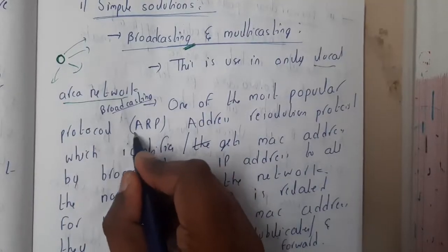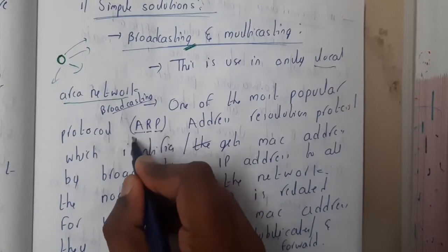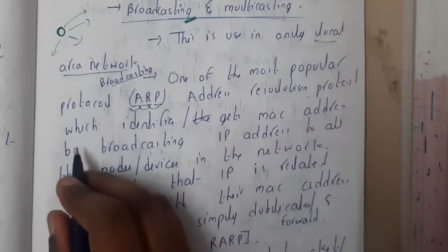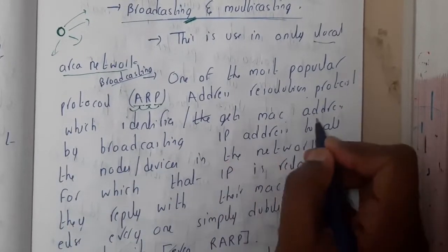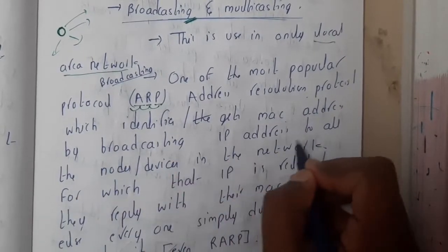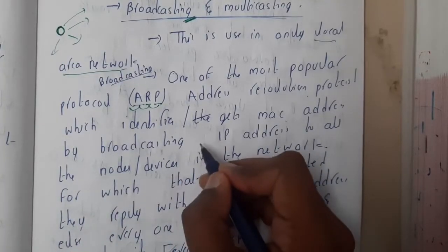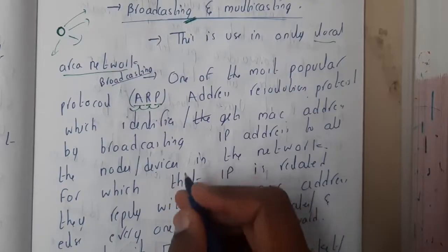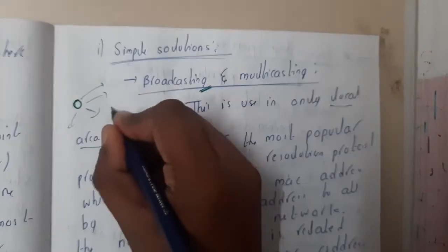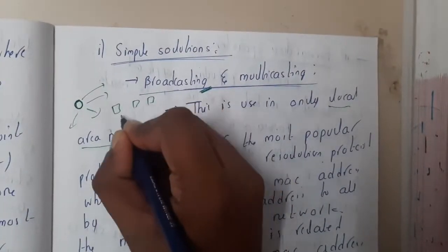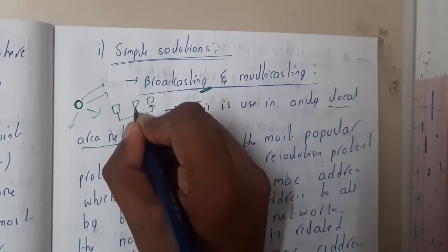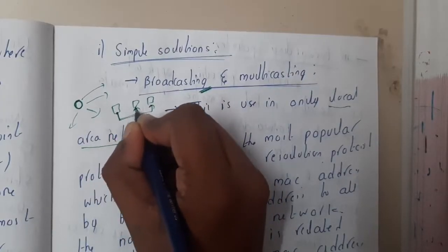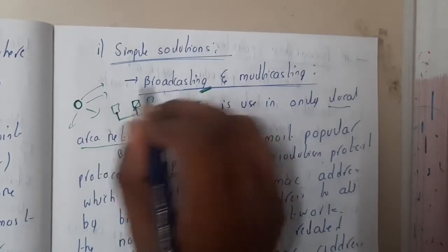One of the most popular protocols is the Address Resolution Protocol, ARP, which identifies or gets a MAC address by broadcasting the IP address to all its nodes. Basically, it sends the IP address to all of its nodes. Let us take an example. These are our three devices. You got two devices and you sent the message to two devices.